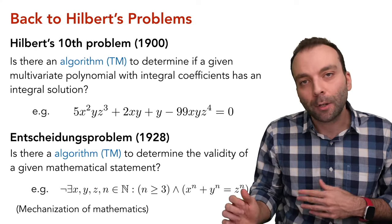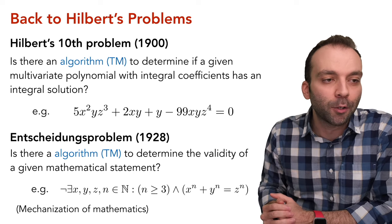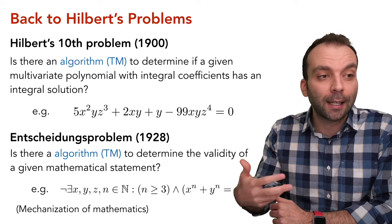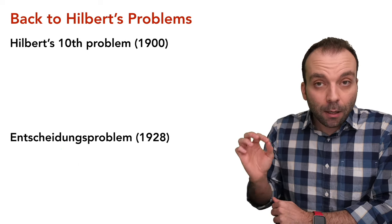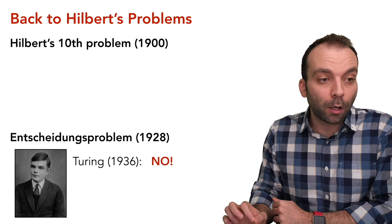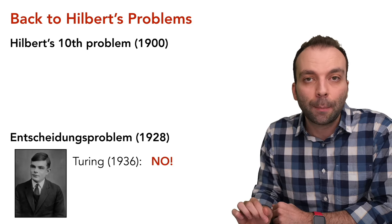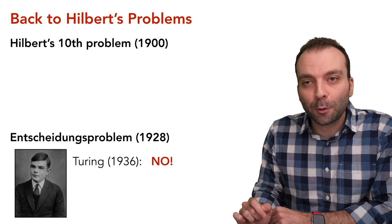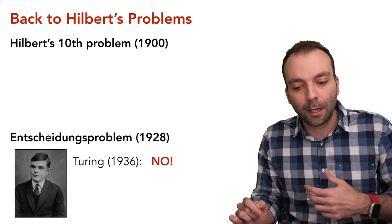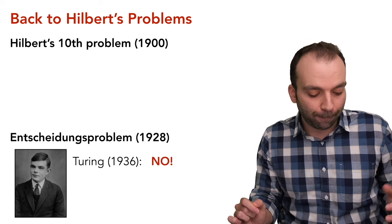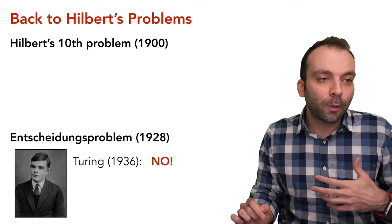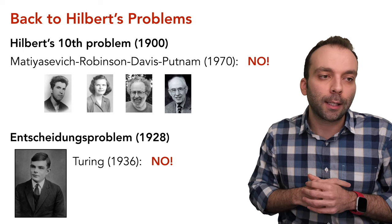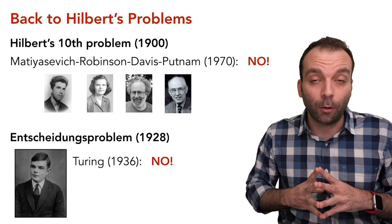With the physical Church-Turing thesis we have the bridge between the real world and the abstract world — the mathematical model for computation is the Turing machine model. Returning to Hilbert's problems: now we know he was asking for a Turing machine. In the very paper where he defined the Turing machine model, Alan Turing proved that the Entscheidungsproblem is not solvable by any algorithm. Computer science was born already aware of its limitations. Hilbert's 10th problem was resolved in 1970 — also unsolvable.